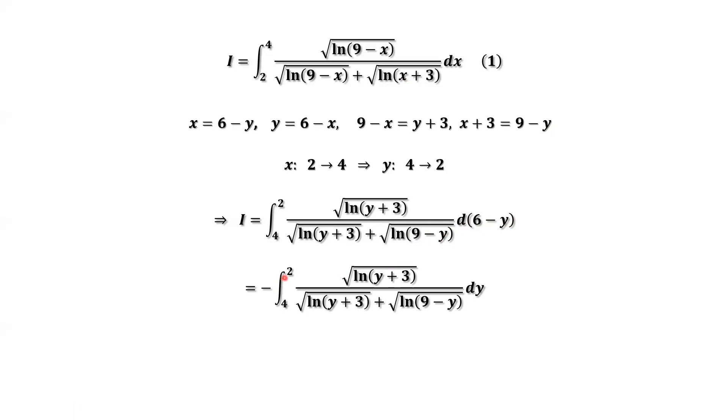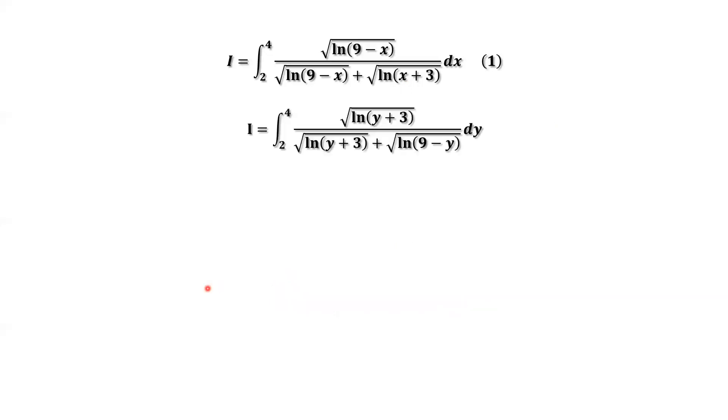Now if we want to swap 4 and 2, we should have a negative sign in front. That means the negative and negative are cancelled out. Then we have this result.